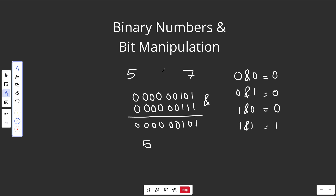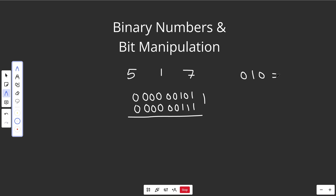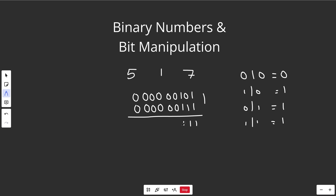Let's switch to OR, which uses the pipe. To do 5 OR 7: 0 OR 0 is 0, but all the other combinations are 1 — because you have at least one true side. So 1 OR 0 equals 1, 0 OR 1 equals 1, and 1 OR 1 equals 1. The result is 00000111, so 5 OR 7 is actually equal to 7.